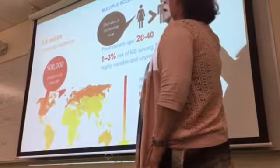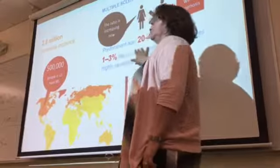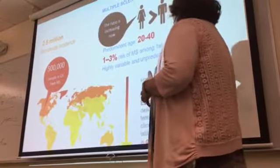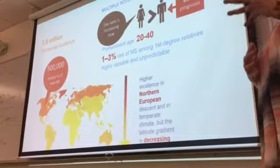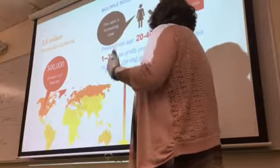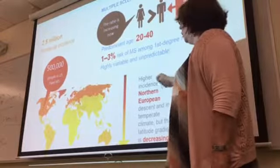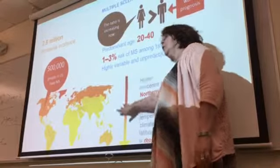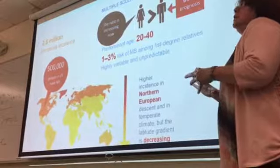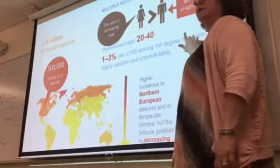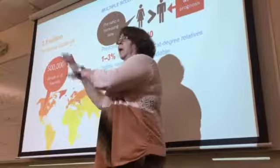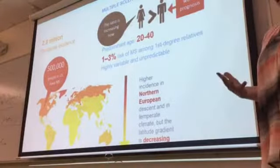Females are diagnosed with MS two times more often than males, but males tend to have a more progressive course and worse prognosis. It typically starts between ages 20 to 40, and risk increases if a relative has MS — even more so with an identical twin. There's also a higher incidence in northern latitudes. If someone at higher risk moves to a southern area like the Orient before adulthood, it almost completely eliminates their chances of getting MS.